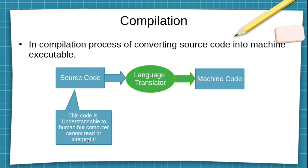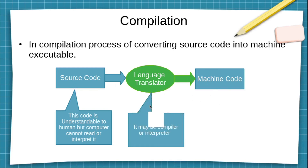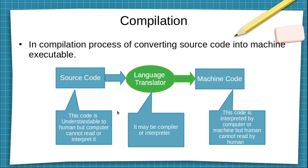We have a language translator which takes this source code and converts it into another code called machine code. A language translator may be a compiler or an interpreter. A compiler is a program that takes a source code as a whole and converts it into machine code, but an interpreter takes the source code line by line and converts it into machine code. Machine code is executed by the machine but humans cannot interpret it.